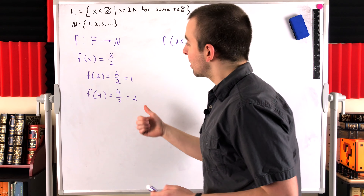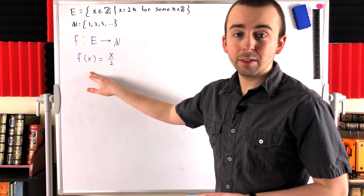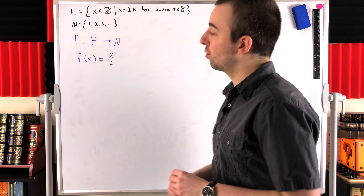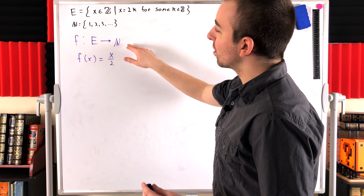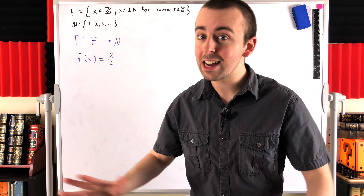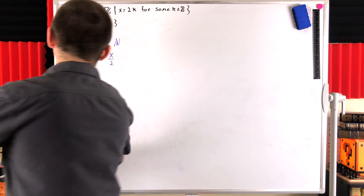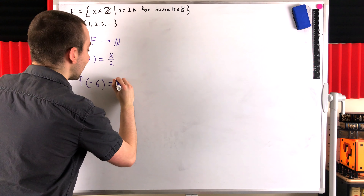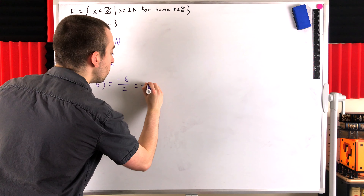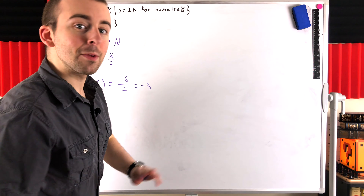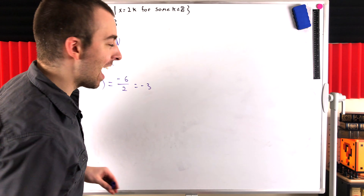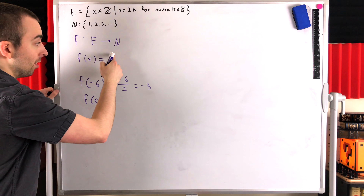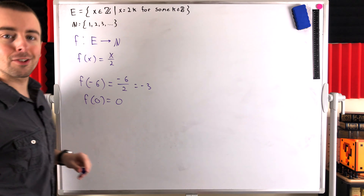This seems like a pretty good start, but this function f will only almost work. We can hit every natural number, but the problem is the naturals are our codomain, so we can't go outside of it — and this function will. If we plug in a negative even number like negative 6, f of negative 6 equals negative 6 divided by 2, which is negative 3 — that's not a natural number. Also, if we plug in 0, f of 0 equals 0, which is also not in the naturals.